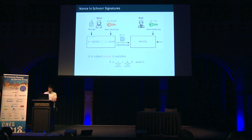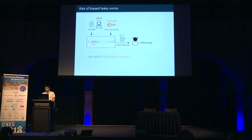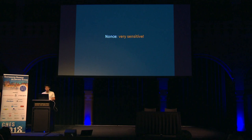Since s and h are public information as part of the signature, Alice should never disclose her nonce to anyone — otherwise it would be very easy to recover the secret key. Also, Alice should never use the same k more than once. But what if k is slightly biased? For example, what if k's top bits are 0? Or what if nonce k is partially leaked? Even in such cases, by collecting sufficiently many signatures, an adversary could still bypass the discrete log problem and steal the secret key by solving the so-called hidden number problem. Nonce is a very sensitive part of Schnorr, DSA, and EC-DSA, and it is crucial to evaluate the risk of biased or leaked nonces.